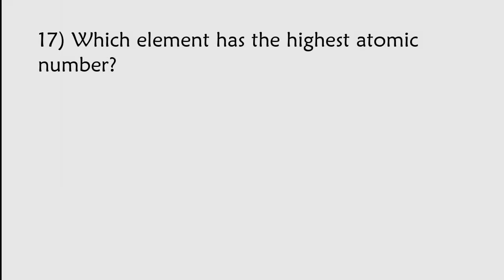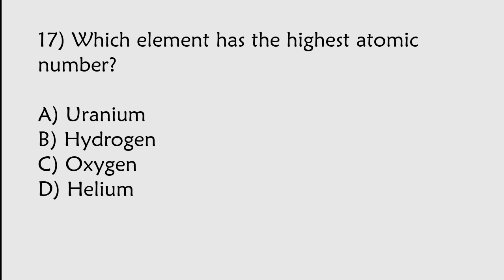Which element has the highest atomic number? Uranium, Hydrogen, Oxygen, Helium. The correct answer is option A. Uranium element has the highest atomic number.